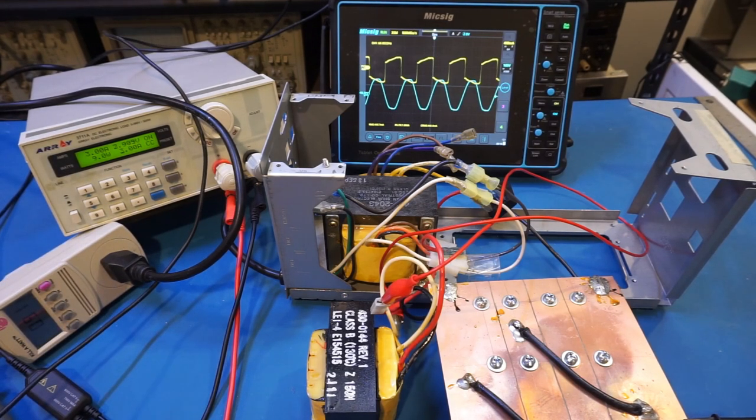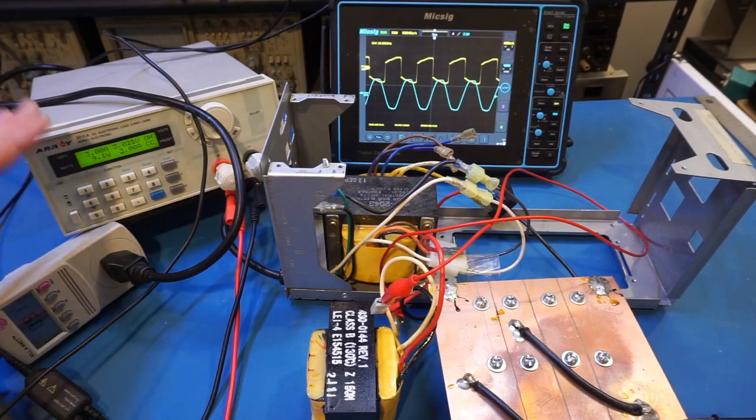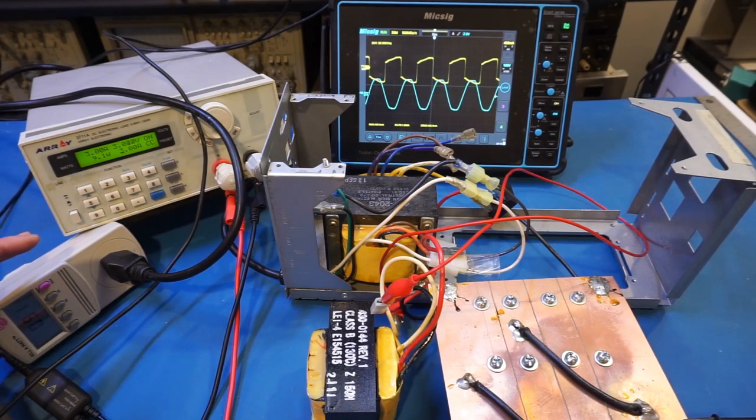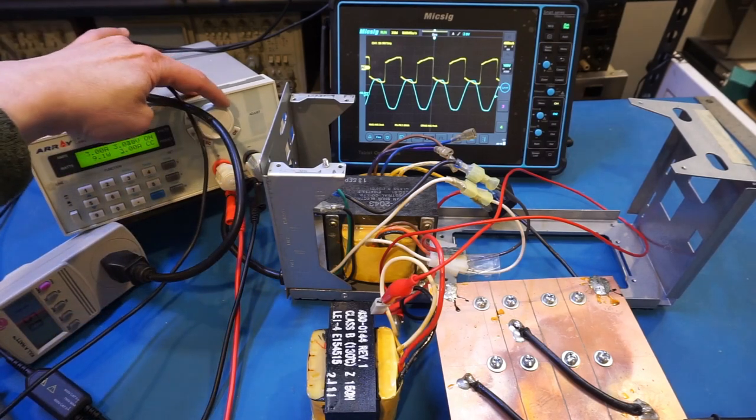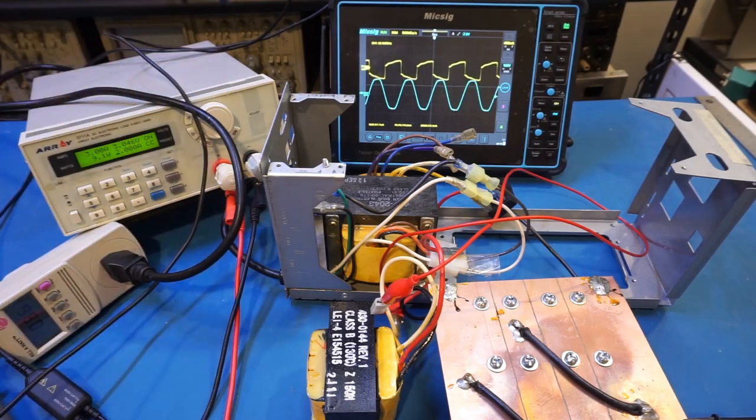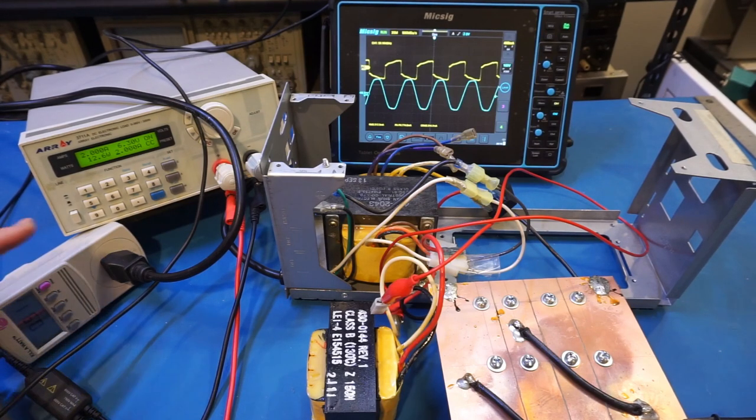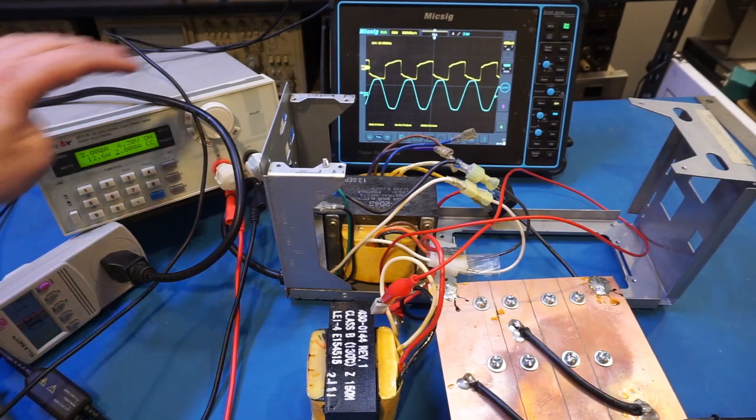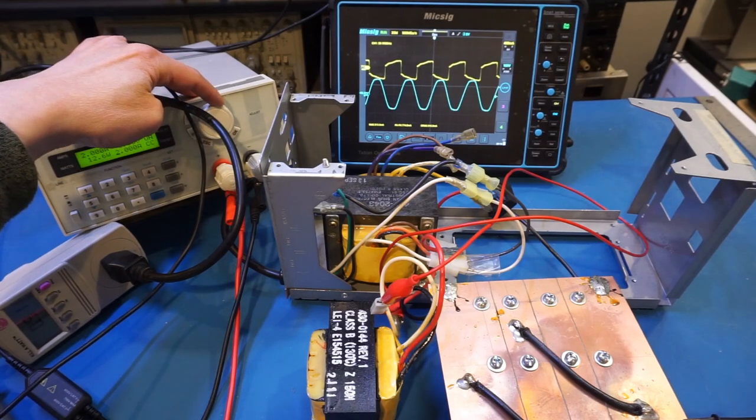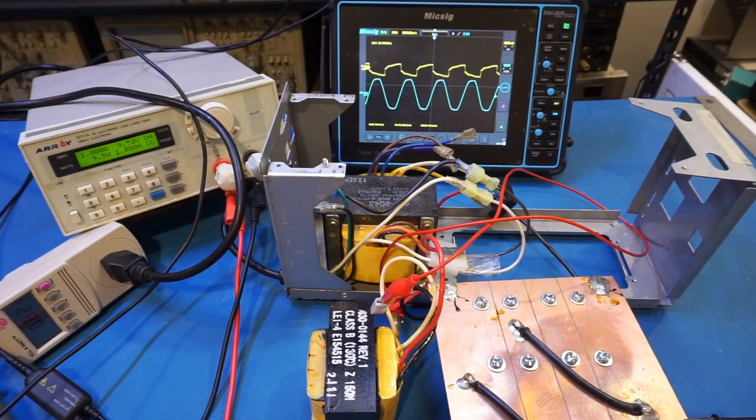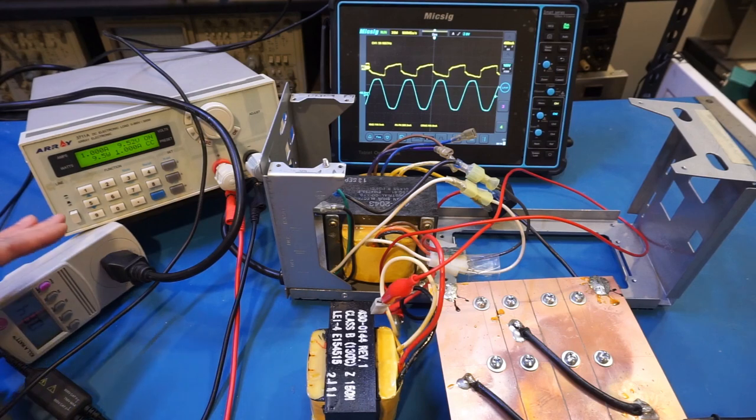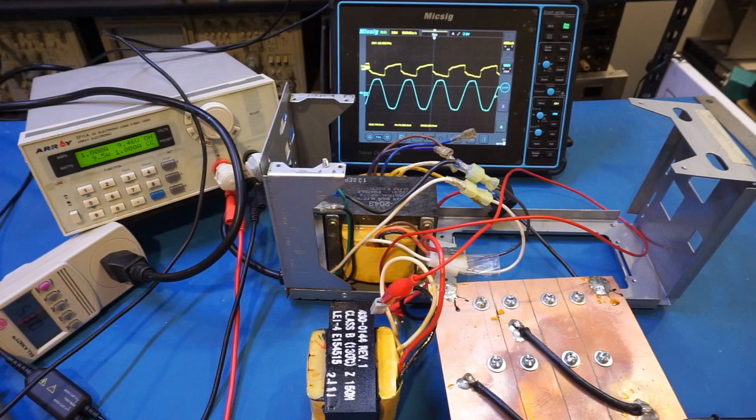Now what I can do is reduce the current to see what impact it has on the power factor. So let me reduce it to 2 amps. And at 2 amps, we're still getting a 0.91 power factor. So let me reduce to 1. Now at 1 amp, you can see the power factor dropped to about 0.85. Even at a power factor of 0.85, that is still very good for a linear power supply.